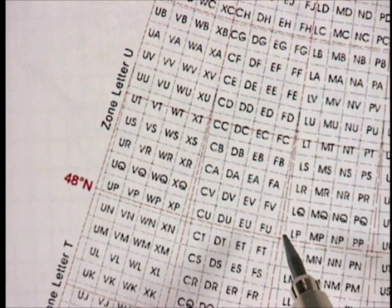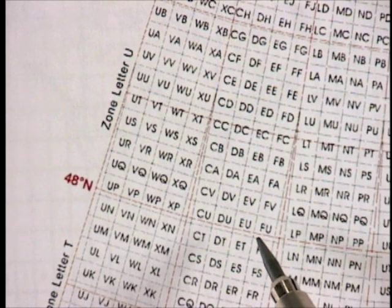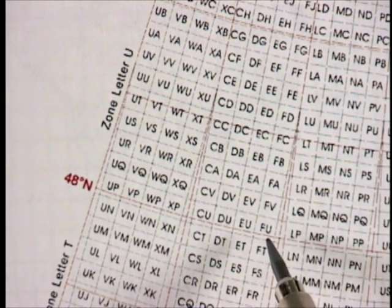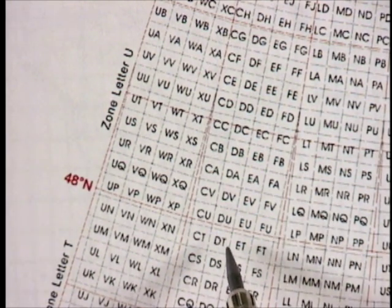This, again, is an example locator chart for most of North America, which gives it, again, kind of arbitrary letter designations. UF, UF, V, just those kind of things. They're also listed at the bottom of the map.